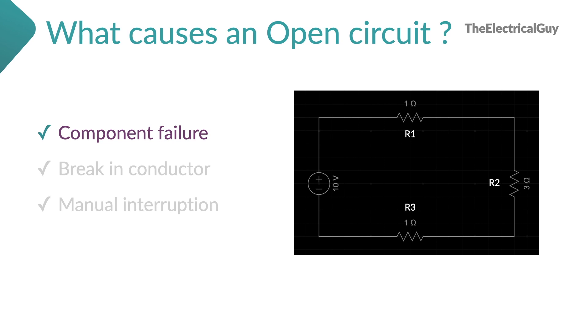For instance, you can see three resistors connected in a circuit as shown. Now because of some reason, R2 is let's say burnt out. Now the circuit is not complete because there is an open circuit.